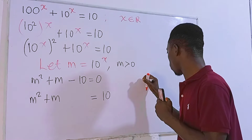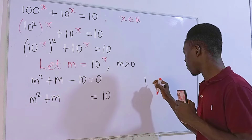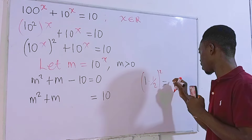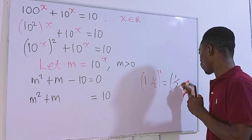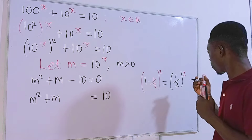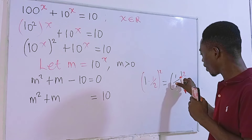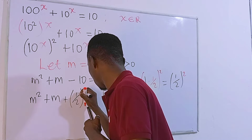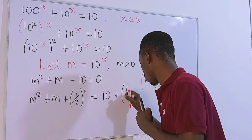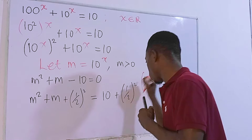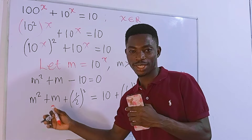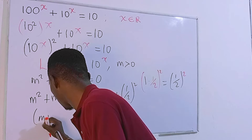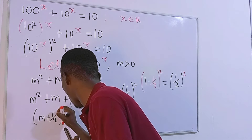The magic number is found by taking the coefficient of m, which is 1, multiplying by one-half, and squaring the result: (1/2)² = 1/4. We add 1/4 to both sides. The left-hand side becomes the perfect square (m + 1/2)².